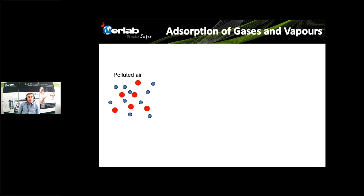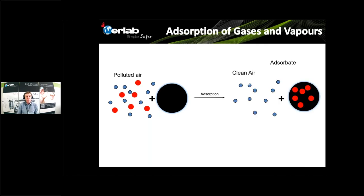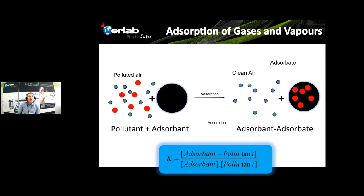When we talk about gases and vapors, we cannot use a network of fibers to trap them because the gas molecules are too small. In that case, we use a chemical reaction called adsorption. The idea is to create a reaction between a mix of polluted air and a material that will absorb the pollution. At the end of the reaction, the pollution is absorbed onto the surface of the material — most of the time activated carbon. As with any chemical reaction, there is also a reverse reaction called desorption.